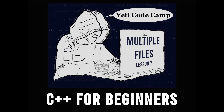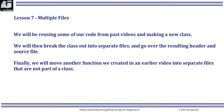Hello and welcome to the seventh video in the C++ for Beginners series. In this video, we will be going over the use of multiple files to make our code more manageable. We will be reusing some of our code from past videos and making a new class. This class will be bare bones compared to the ones we looked at in the last video. We will then break the class out into separate files and go over the resulting header and source file.